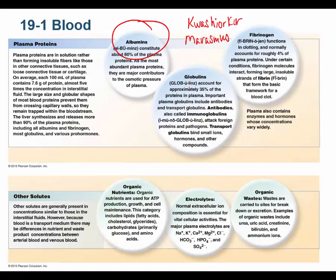The globulins we'll discuss are the immunoglobulins, also called antibodies. They're important but not a major protein fraction, and their level fluctuates depending on whether you have an infection. Another very important protein is fibrinogen, which is involved in blood clotting — you have about 200 milligrams per deciliter in your blood at any given time.